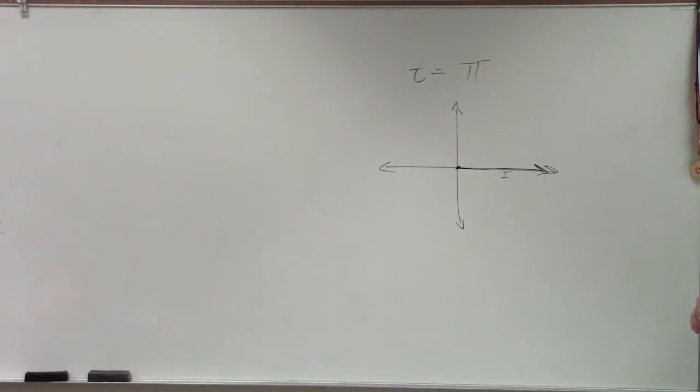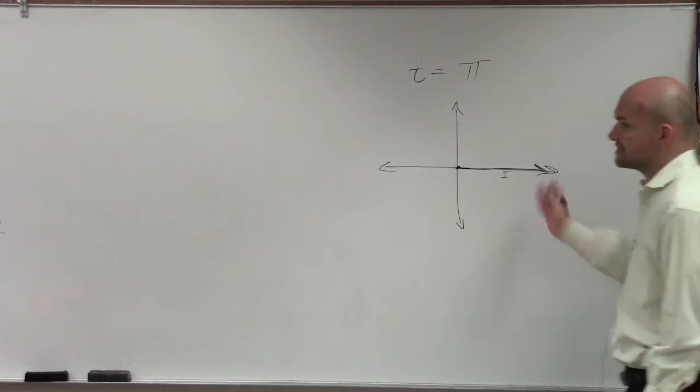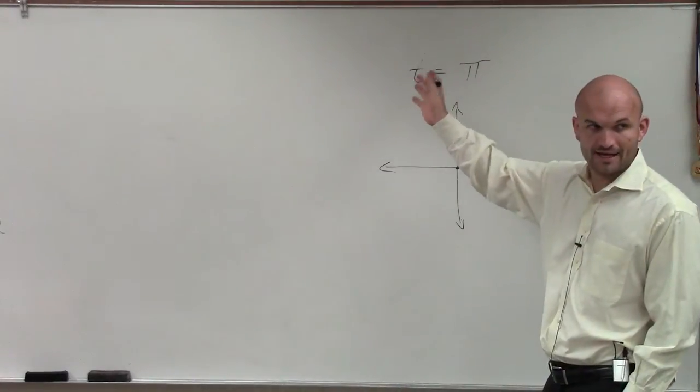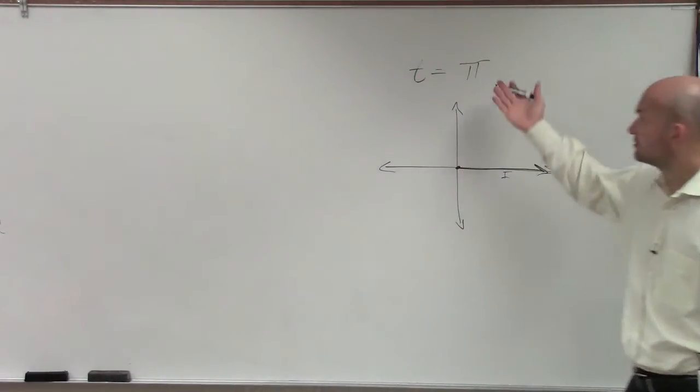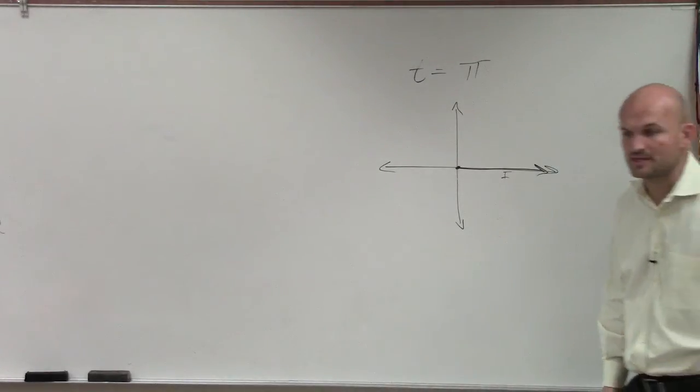All right? Then from the initial side, we're going to rotate another ray at the vertex, a distance of a measurement of pi.